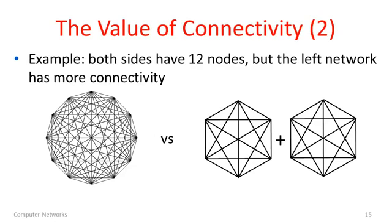But imagine here, in both of these pictures, on the left hand side and the right hand side, I have 12 nodes in a network. Now on the left hand side, I have a larger network that has more connectivity. It's more valuable. This network here is what's called a mesh. Actually, it's a full mesh. There are 12 nodes here, and each node is connected to all of the other nodes. We think about the number of connections in it.